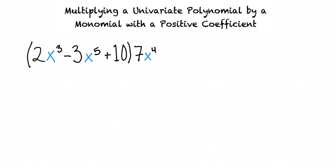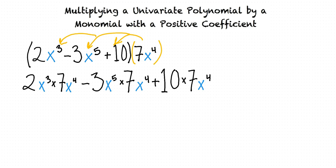How can we simplify this? First, we distribute 7x to the fourth to each term inside of the parentheses. This gives us 2x cubed times 7x to the fourth minus 3x to the fifth times 7x to the fourth plus 10 times 7x to the fourth.